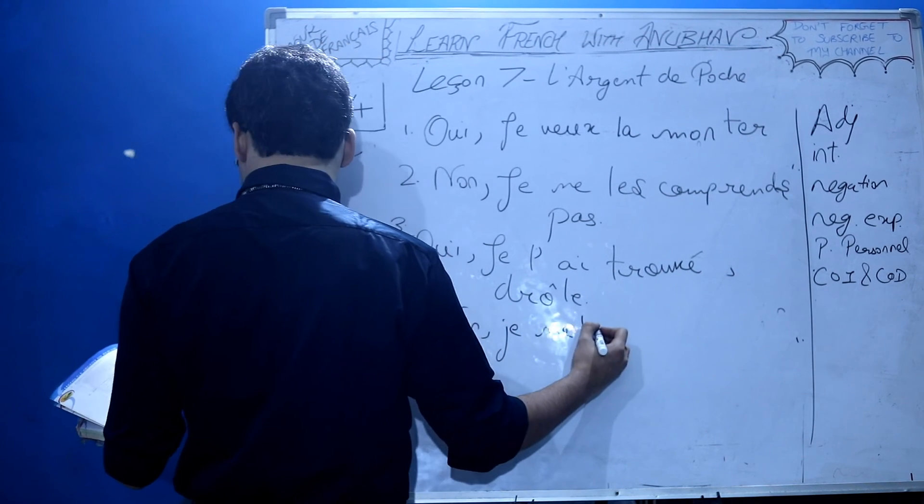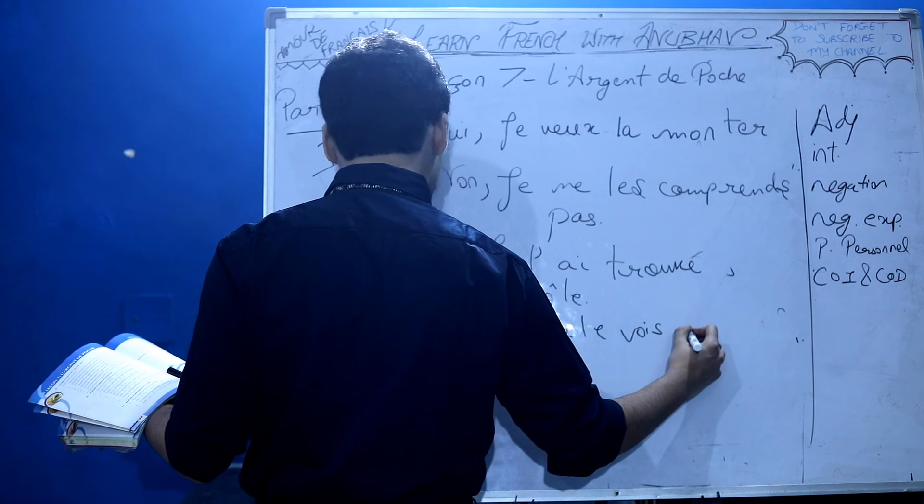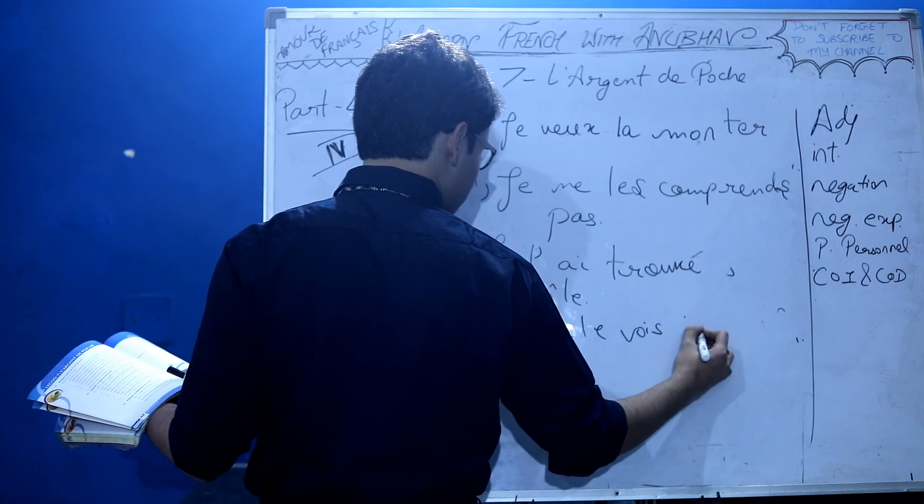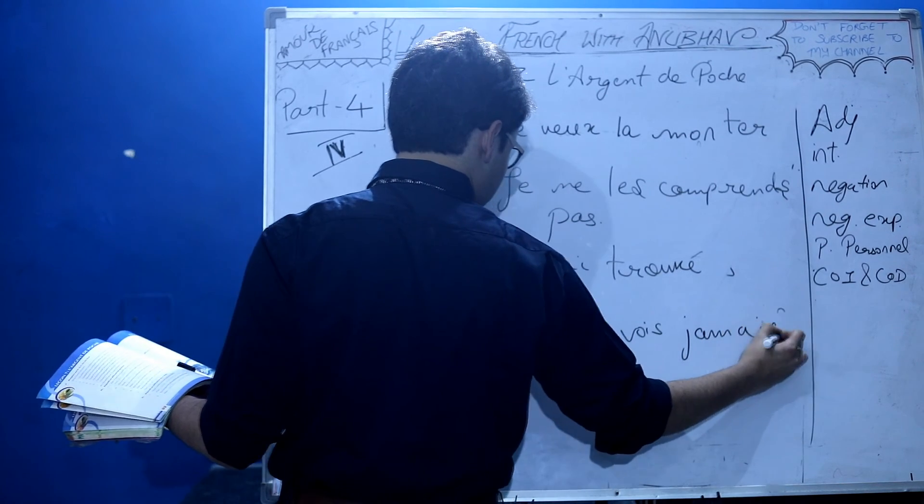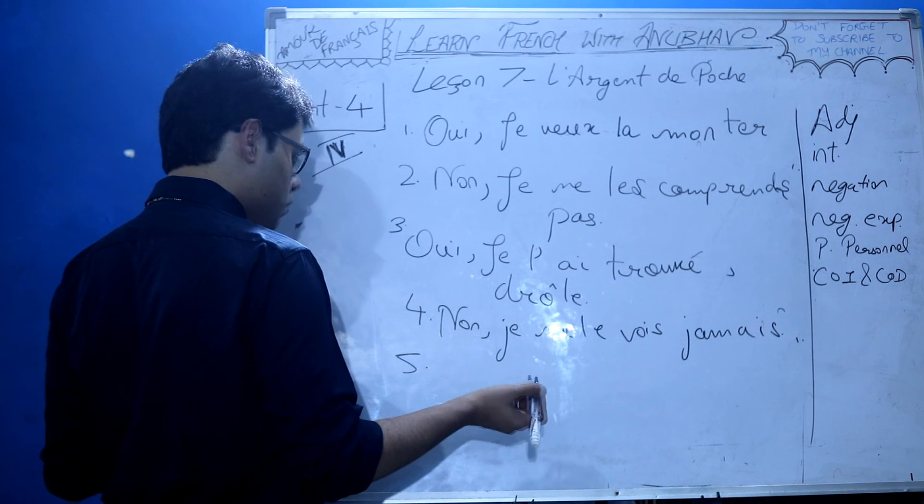Fourth: Je ne le vois toujours. Negative counterpart? Jamais. I never visit my friend, or I no longer visit my friend. You could say je ne le vois plus.